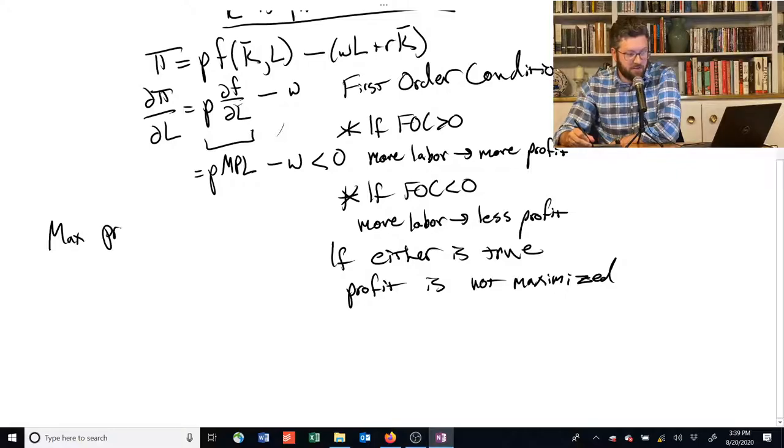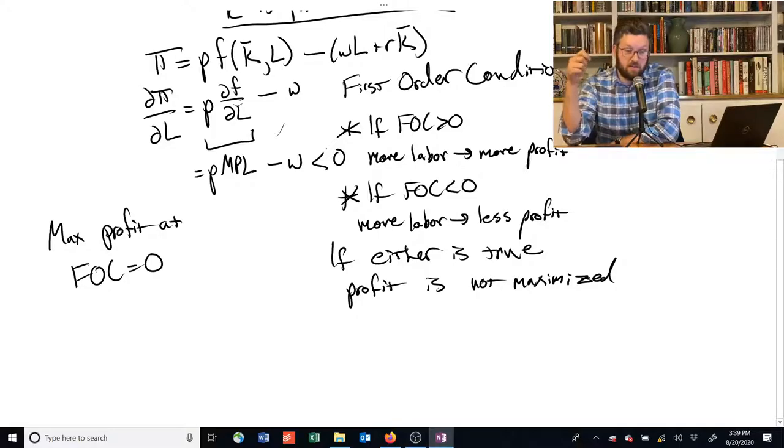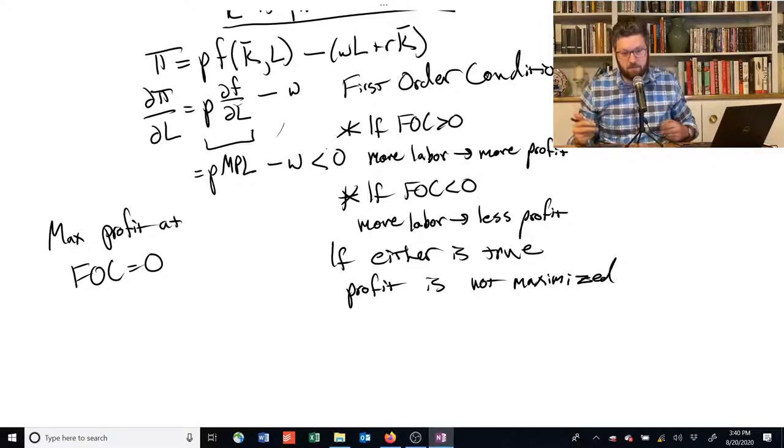Instead, the maximum profit is going to be attained at first order condition equal to zero. We want that first order condition to be equal to zero. That means that if we change our labor in any direction, if we increase it a bit or decrease it a bit, profit stays at the same level. Any reduction in sales is exactly offset by the reduction in our labor costs. And if we increase labor, any increase in sales is exactly offset by the increase in wages. And if we're at that tipping point right in the middle, that's telling us that you can't do any better. You can't maximize profit anymore, and so you're at the profit maximization point.